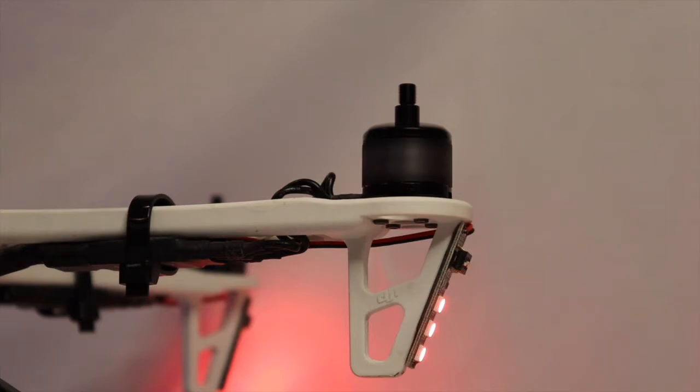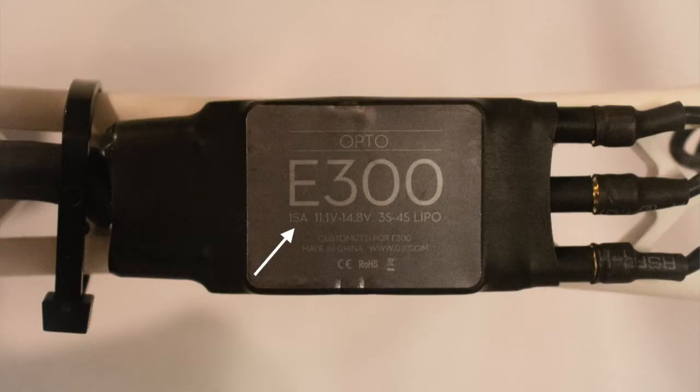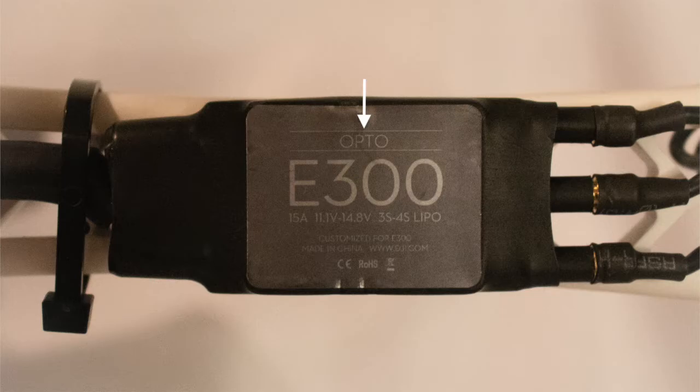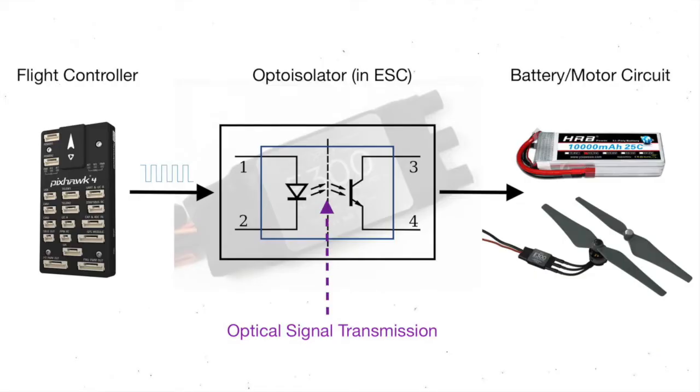15 amps is a rating that refers to the maximum continuous current draw through each ESC. Opto means that these ESCs use an optical device called an opto-isolator that transmits the command signal from the flight controller to the motors, allowing for electrical separation between the motor power circuit and the other electronics onboard.